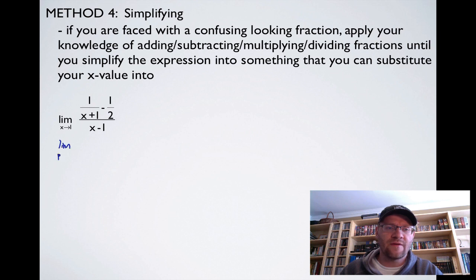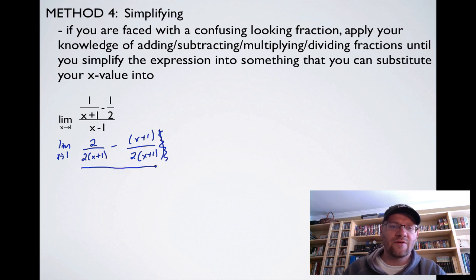I've got the limit as x approaches 1. On the top, I have two fractions, and I'm trying to subtract them, so I need a common denominator. I'm going to multiply the first fraction by 2 over 2. I'm going to multiply the second fraction by (x plus 1) over (x plus 1). So I get 2 over (2x plus 1) minus (x plus 1) over (2x plus 1). And that's all divided by this x minus 1 still.